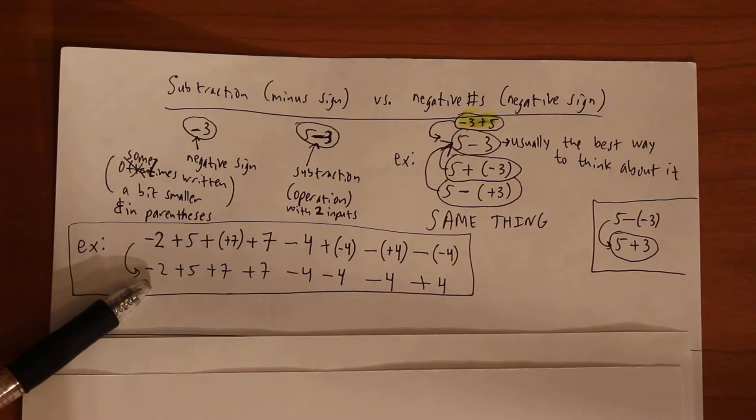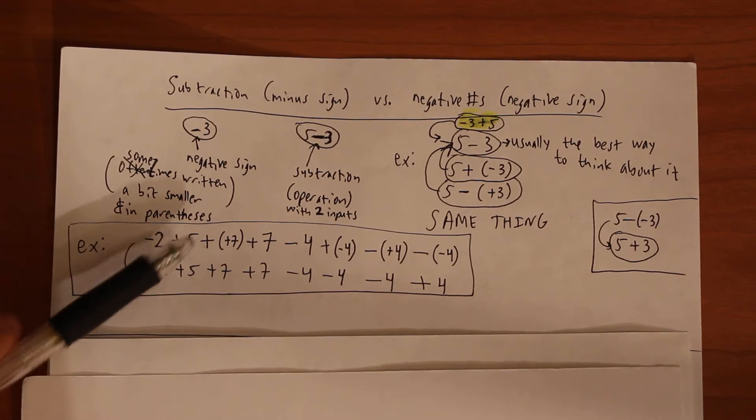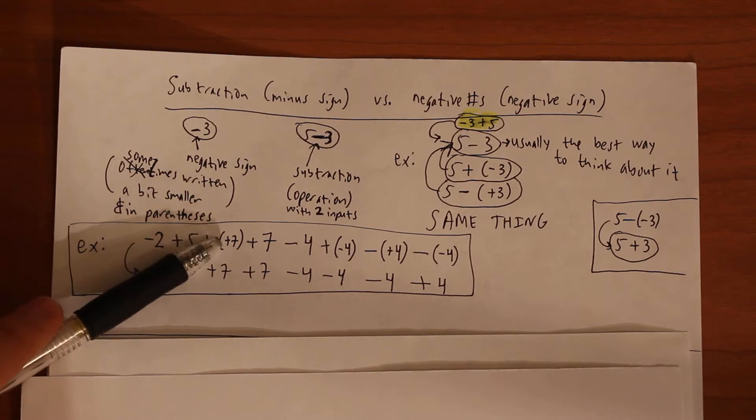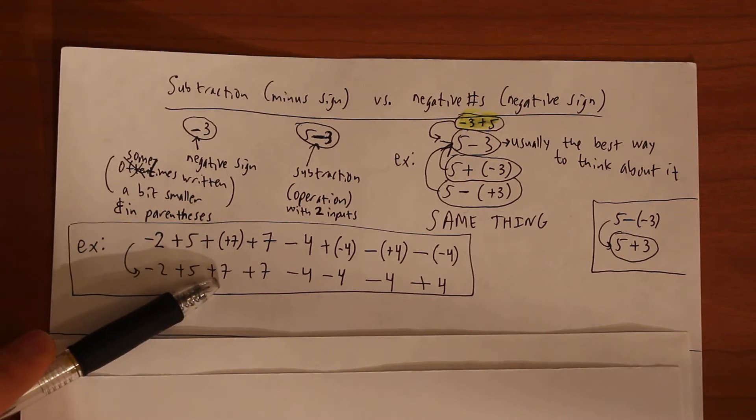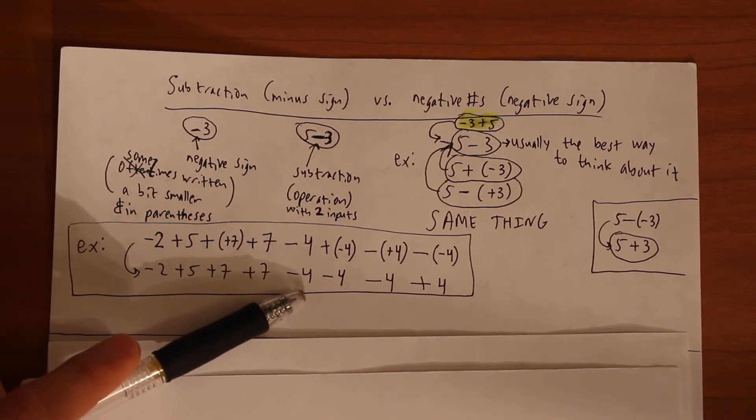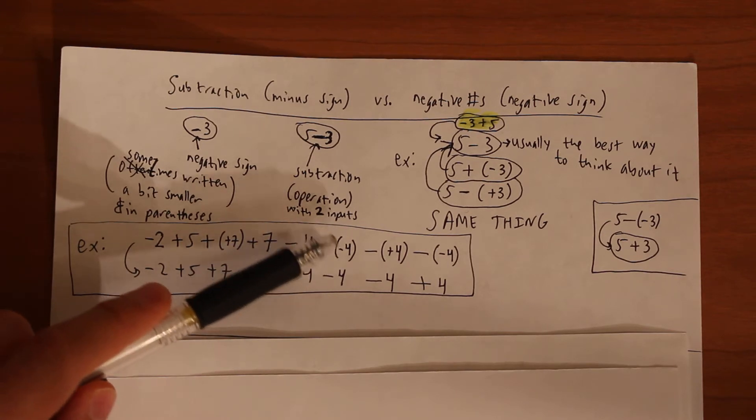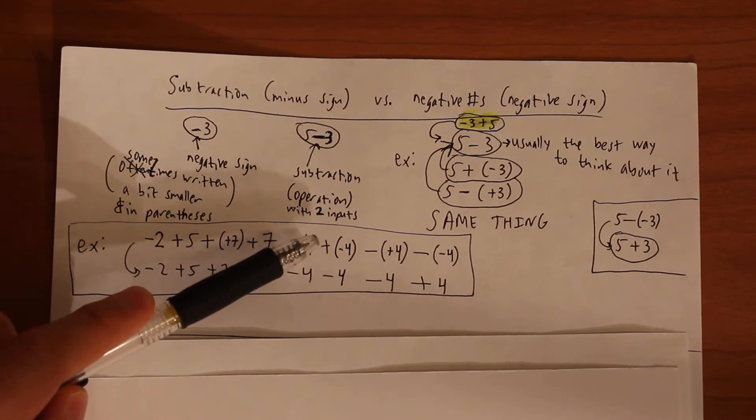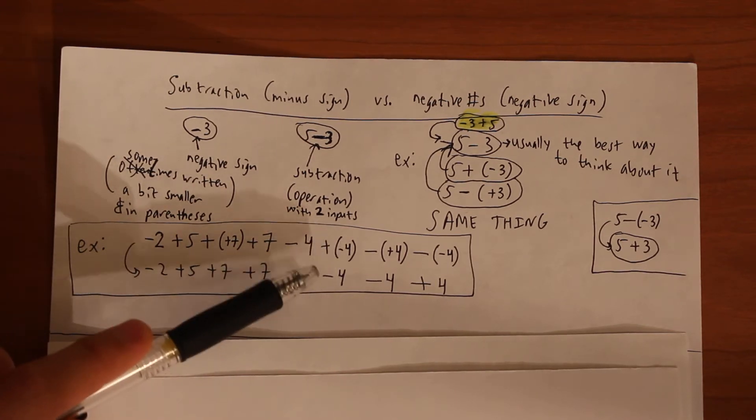So negative 2 is just negative 2, 5 stays 5. That extra plus indicating, sorry that positive sign is not necessary, so we could just drop it and put the regular 7. That's a regular 7, regular minus 4, regular minus 4, negative 4. So we can combine the plus and the minus into just a minus.